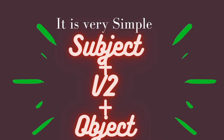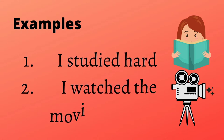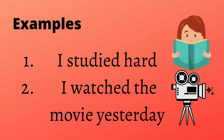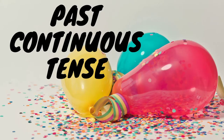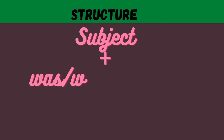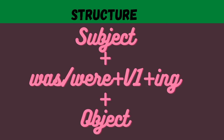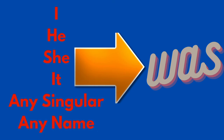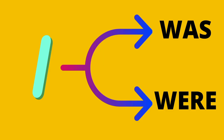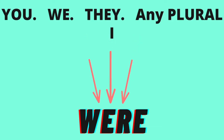Past simple is very simple — it is subject plus second form of the verb plus object. Past continuous tense has the structure: subject plus was/were plus first form plus -ing plus object. We use 'was' with I, he, she, it, any singular noun or any name. We use 'were' with you, we, they, any plural, and also with I.